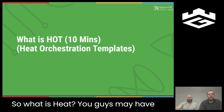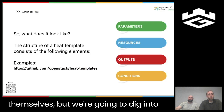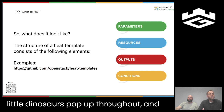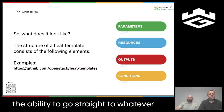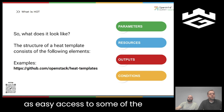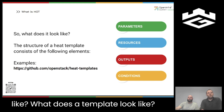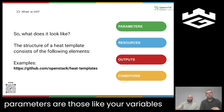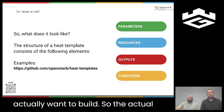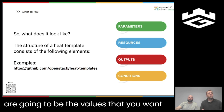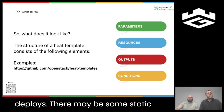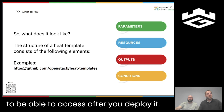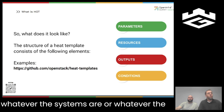So what is a heat template? When we look at heat templates, they are broken up into major sections: parameters, resources, outputs, and conditions. Parameters are your variables. Resources are the things you actually want to build — the actual components. Outputs are values you want to get back after your environment deploys, such as IP addresses or secrets, so you can gain access to whatever systems or services you provisioned. Conditions allow you to define logic — for example, if a value is true, deploy development; if not, deploy production — letting you reuse your template for multiple use cases.